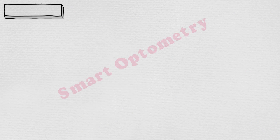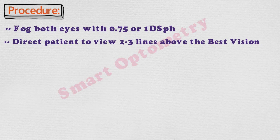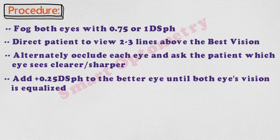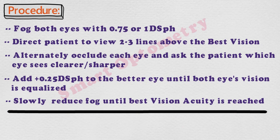Now let's study the procedure. Fog both eyes with 0.75 or 1 diopter spherical. Direct the patient to view two to three lines above the best vision line. Alternately occlude each eye and ask the patient which eye sees clearer or sharper. Add plus 0.25 diopter spherical to the better eye until both eyes' vision is equalized. Slowly reduce the fog until best vision acuity is achieved.